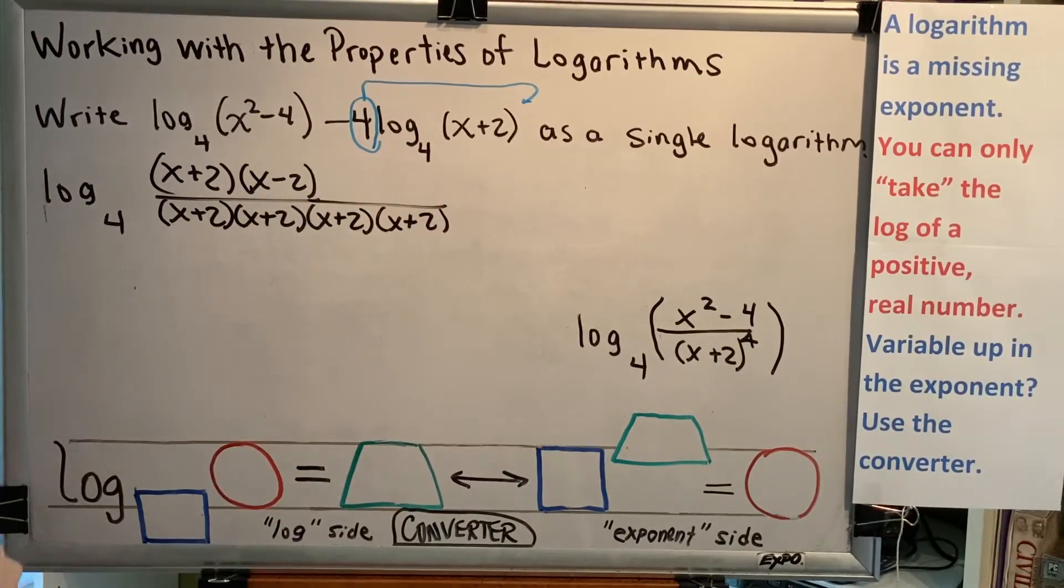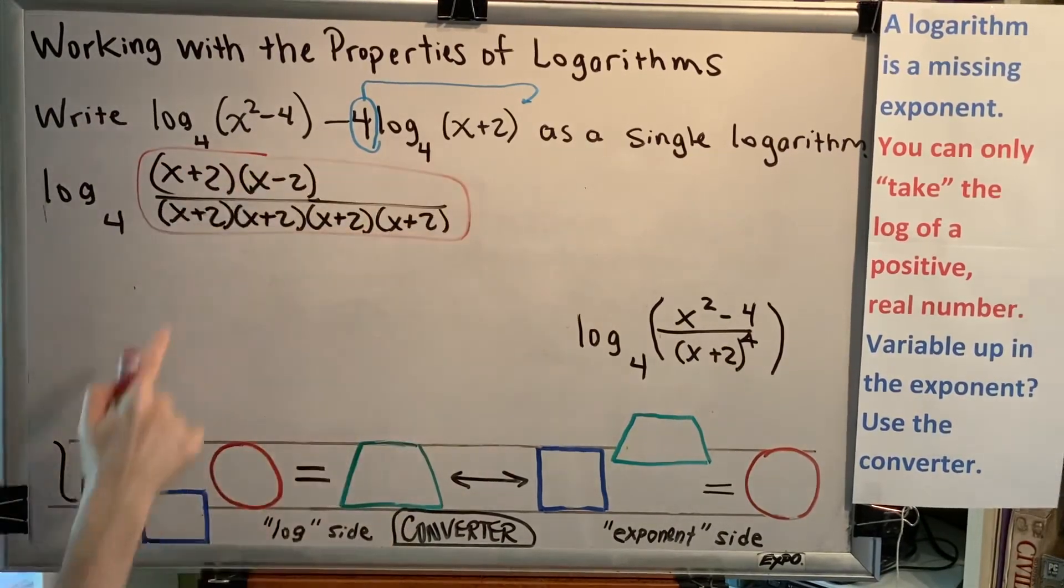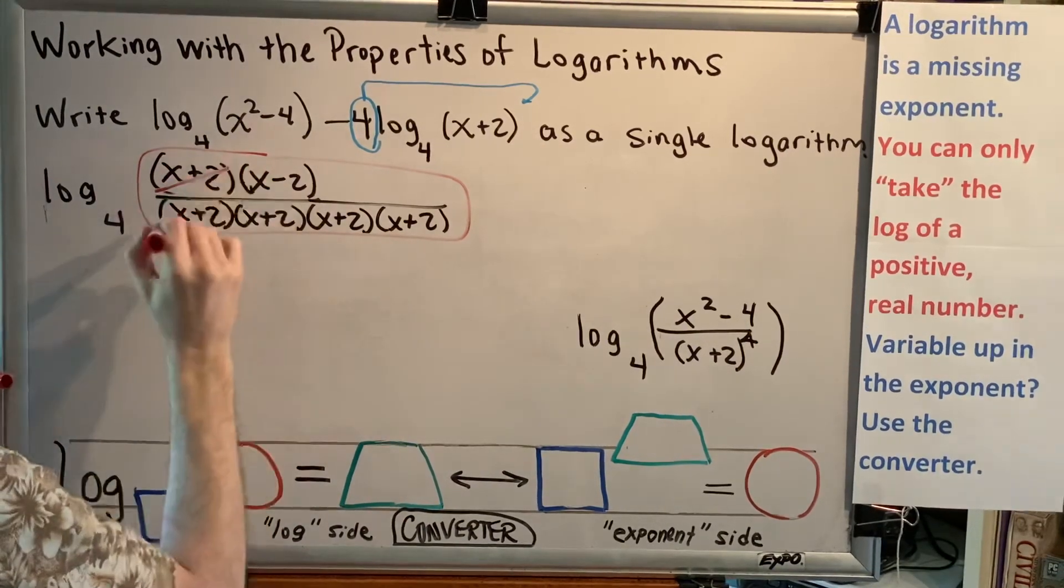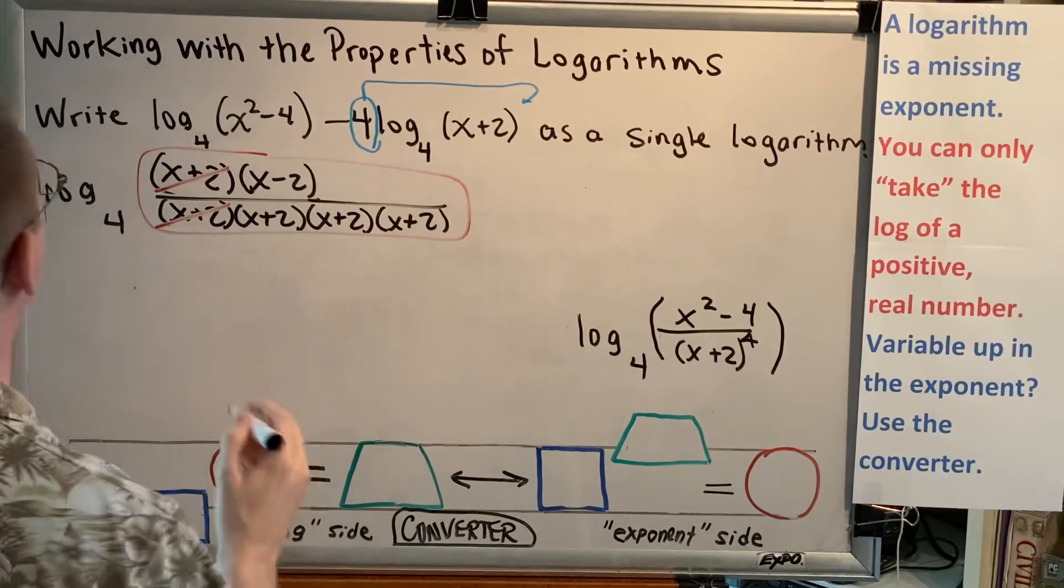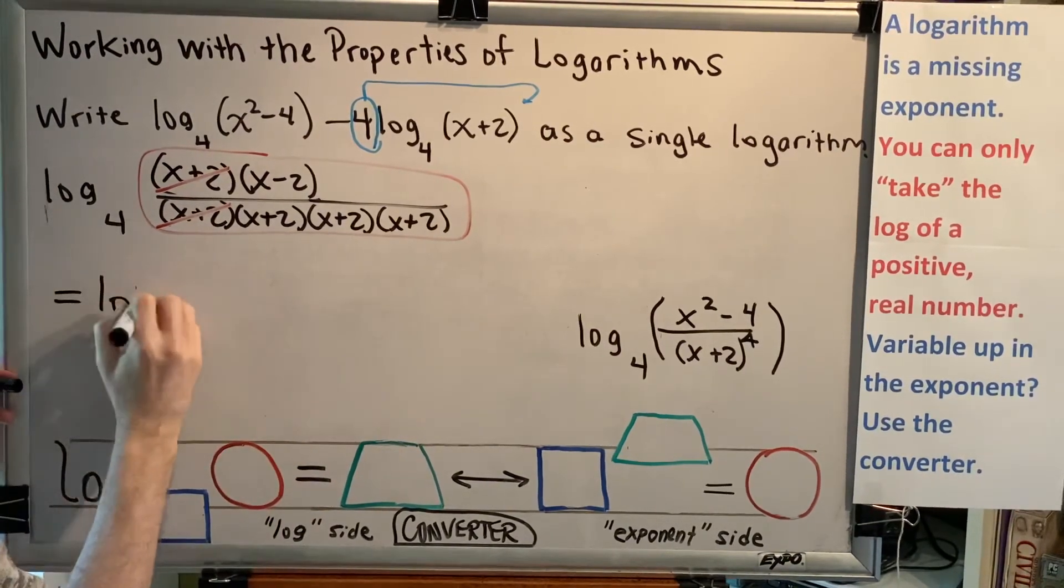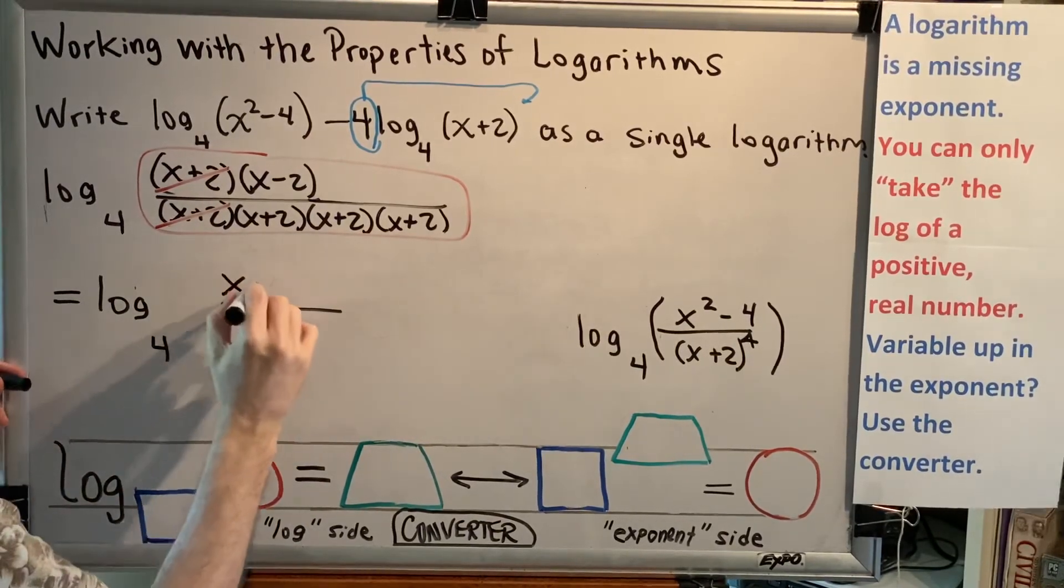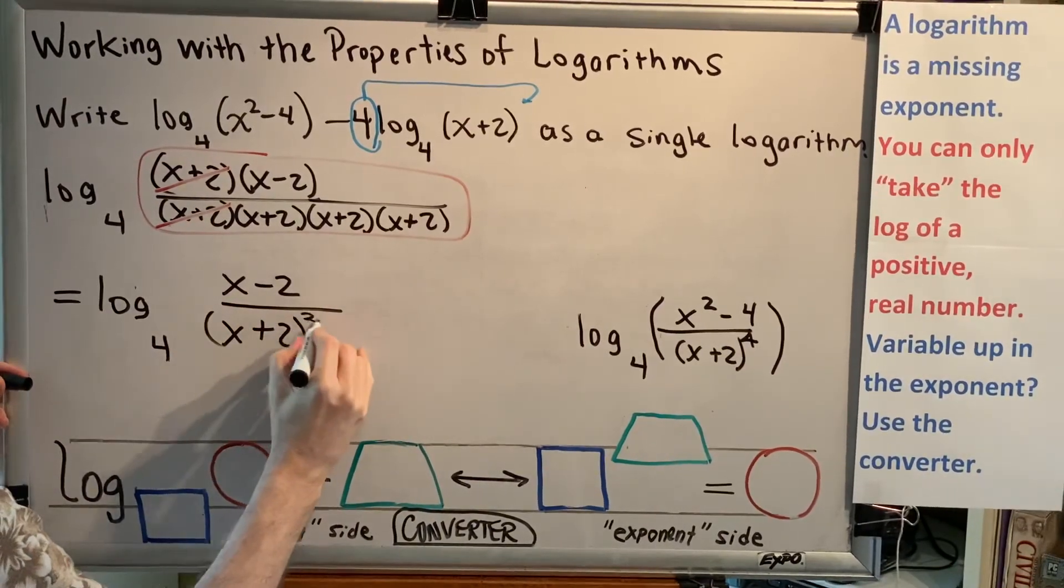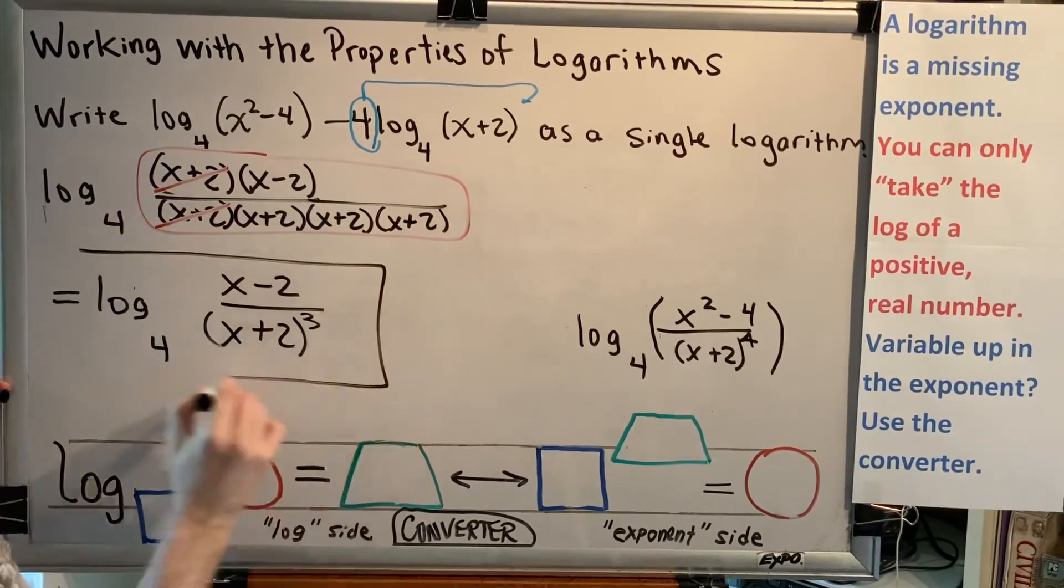This entire fraction is the argument, but you'll notice that it has an x plus 2 top and bottom, and since both those x plus 2s are factors, they can be canceled to 1. This allows me to rewrite my problem as log base 4 of the stuff that's left over, x minus 2 up top, and x plus 2 cubed, because now there's only three of them, down below. This is our final answer for this problem.